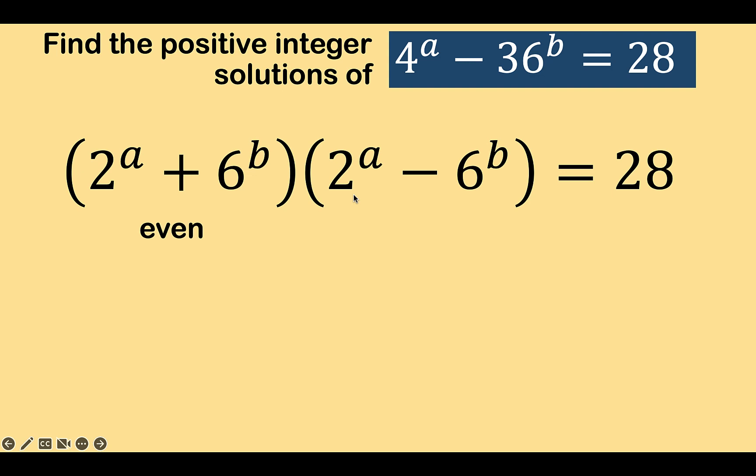Another thing that we observed here is a and b are positive integers, and we are adding 2 raised to that positive integer plus 6 raised to that positive integer. We know that the result of 2 raised to a plus 6 raised to b must be a positive number. And since 28 is positive, then this second factor must also be positive because positive times positive is equal to positive. We also note here that 2 raised to a plus 6 raised to b must be greater than the second factor because we have here addition and we have here subtraction.